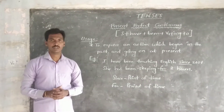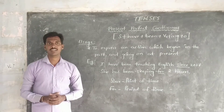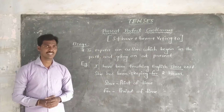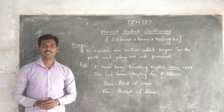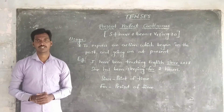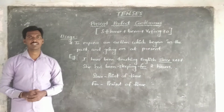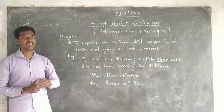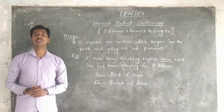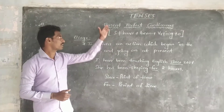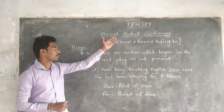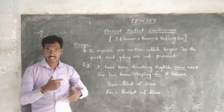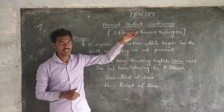Before we begin the topic, first of all, we have to understand what is Present Perfect Continuous. Just observe the title — Present Perfect Continuous. You can understand it easily. Present means Now. Perfect means Started. Continuous means Going On.